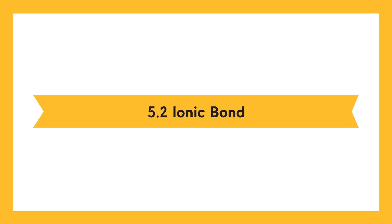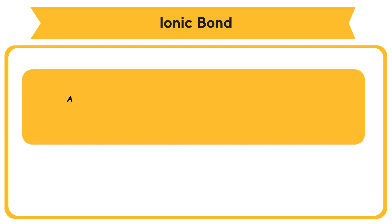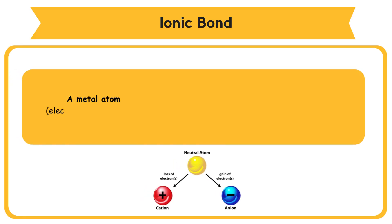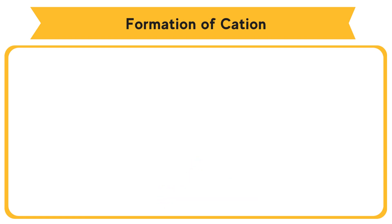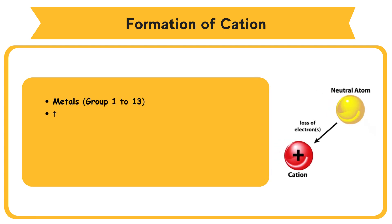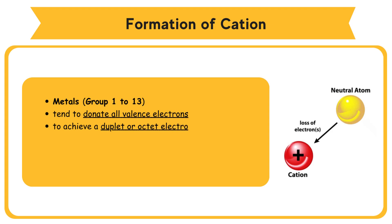5.2 Ionic Bond. An ionic bond is formed when a metal atom (electropositive element) transfers its valence electrons to a non-metal atom (electronegative element). Formation of cation: elements that are metals — Group 1 to 13 — tend to donate all valence electrons to achieve a duplet or octet electron arrangement.